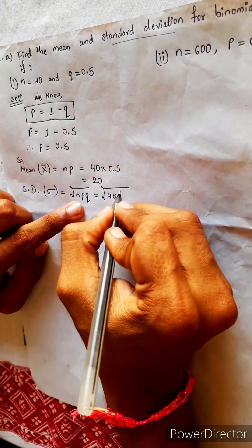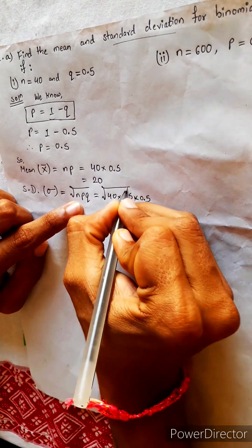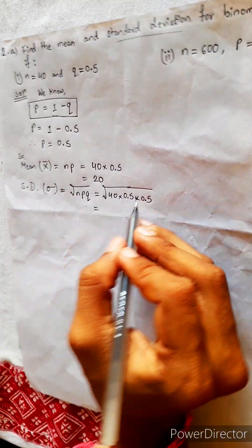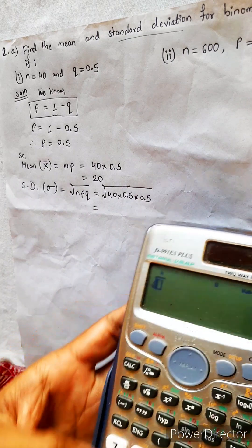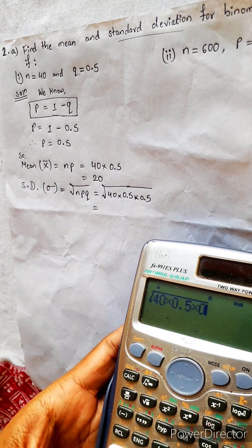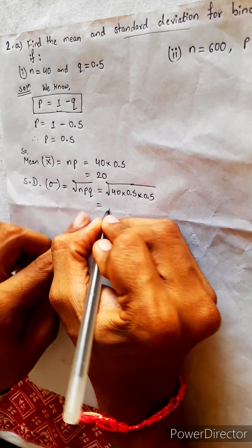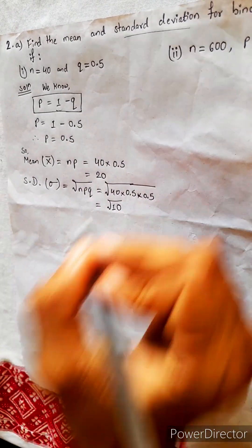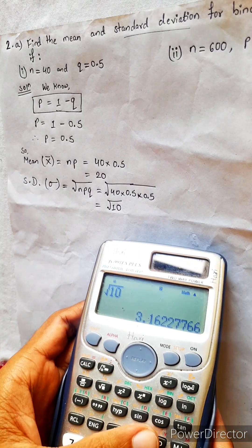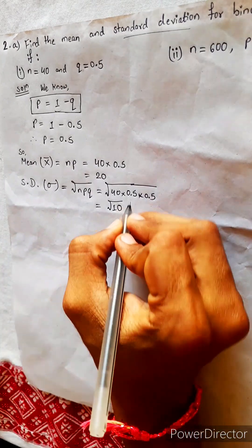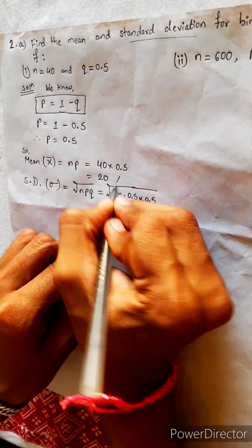40 into P 0.5, Q also 0.5. I think this is 10, because 1/2 times 1/2 times 40 — 40 by 4 is 10. So 40 into 0.5 into 0.5 equals 10. Under root 10, we have to find this: 3.16. So 3.16 — this is one answer.